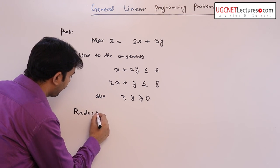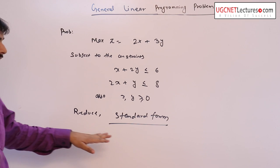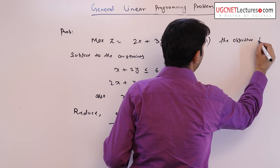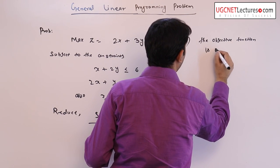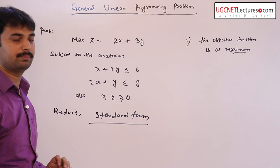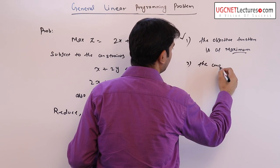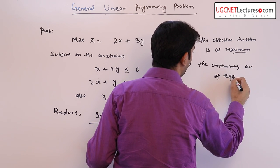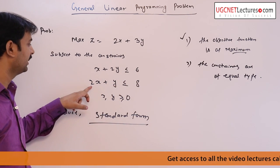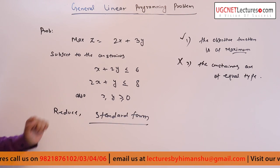The problem is: reduce the above problem in its standard form. As we know, in standard form the first criterion is that the objective function is of maximization type — here in the problem it is maximized, so the first criterion is satisfied. The second criterion: the constraints are of equality type. Here, x plus 2y is less than or equal to 6, and 2x plus y is less than or equal to 8 — this criteria is not satisfied, so this is not in standard form.